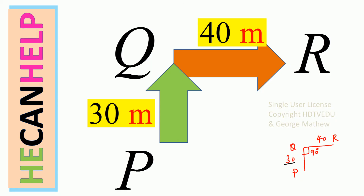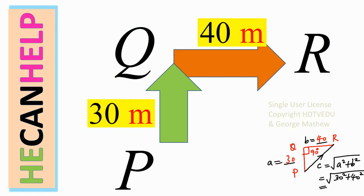From P to Q the distance is 30, and from Q to R it is 40. Since we have a right-angled triangle, the hypotenuse C equals the square root of A squared plus B squared. So, the square root of 30 squared plus 40 squared: 30 squared is 900, 40 squared is 1,600, and 900 plus 1,600 equals 2,500.